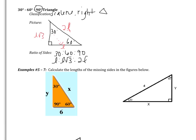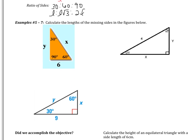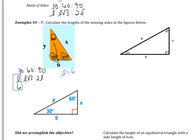This is a little more complicated than 45-45-90, but it's a very similar process. In example 5, we know right away it's a 30-60-90. Writing the ratio: 30, 60, 90 → L, L√3, 2L. The side across from the 30 is 6, so L = 6. That gives us L√3 = 6√3, and 2L = 12. X is across from the 90, so X = 12. Y is across from the 60, so Y = 6√3.